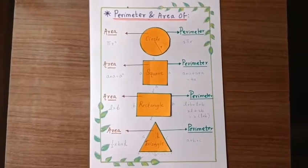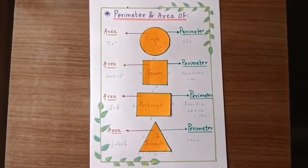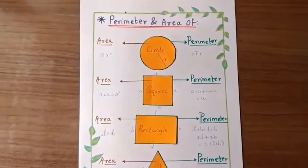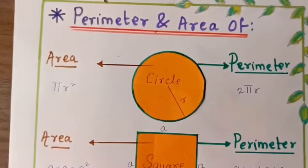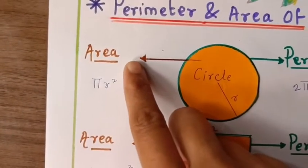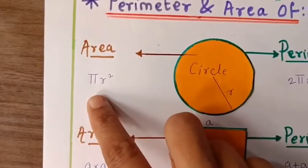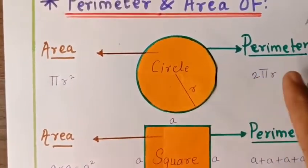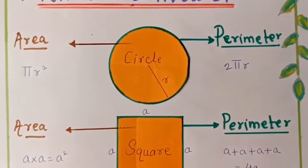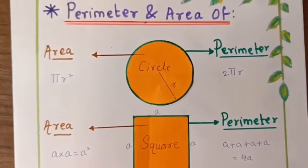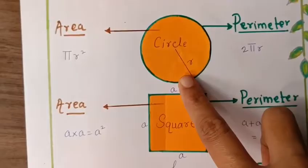Here is the perimeter and area of all four shapes. First, we will see circle. Its area: area of circle is πr². Then perimeter of circle is 2πr. That's the formula of circle. Then square.